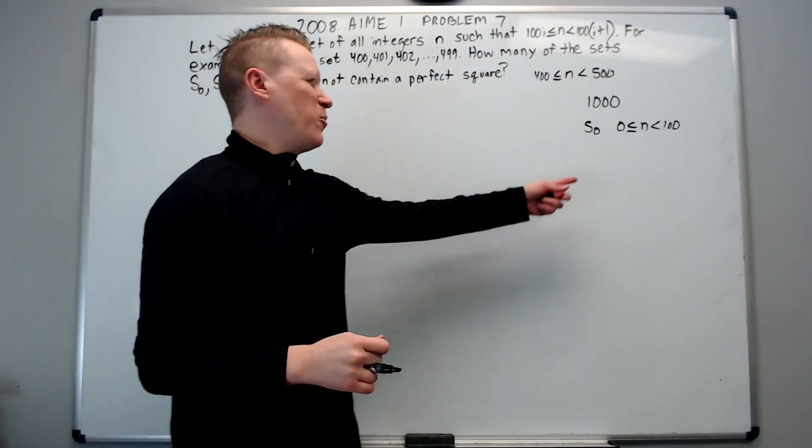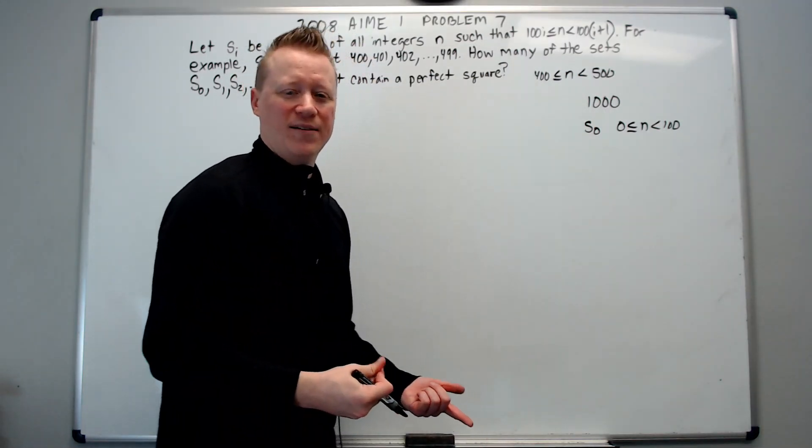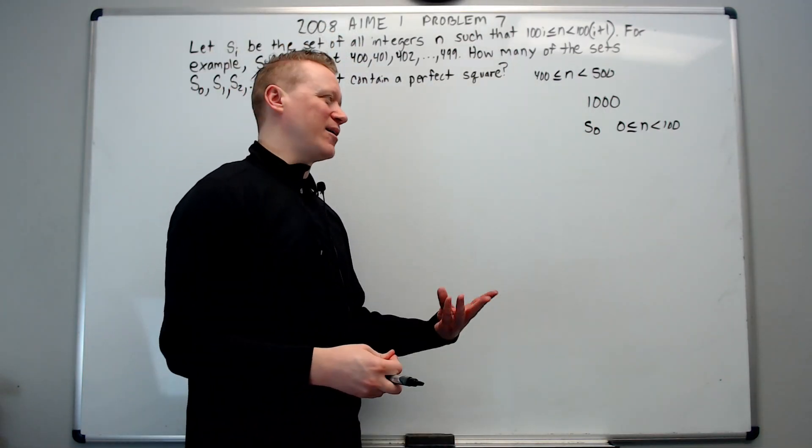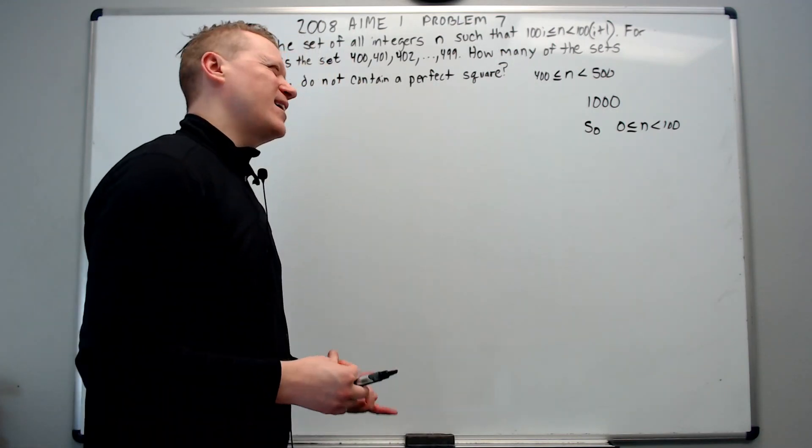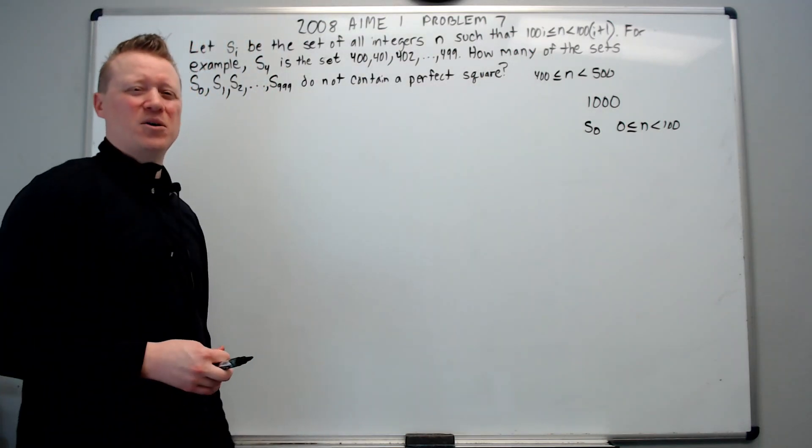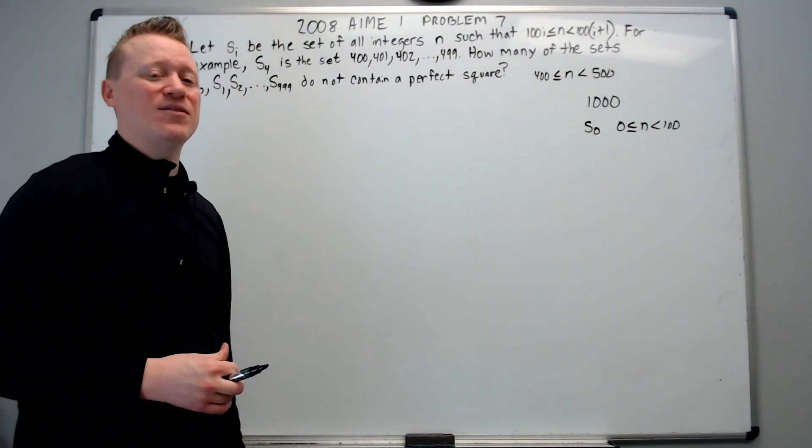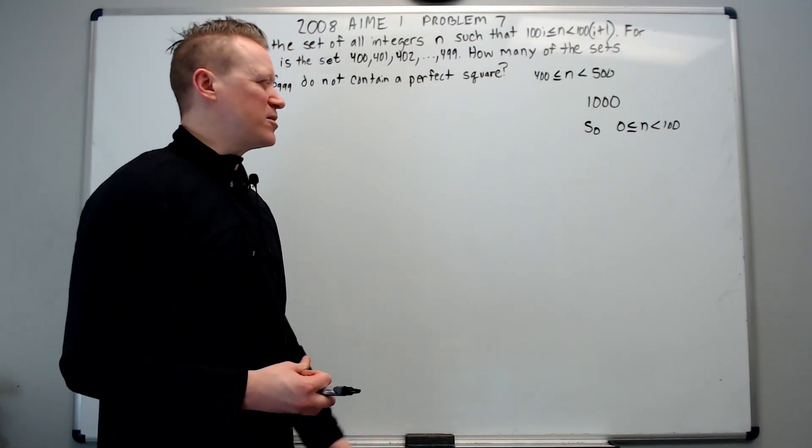For example, we know that s sub 0 will be the set where n is greater than or equal to 0 and less than 100. Basically, it's the first 100 integers starting from 0. And we could think, well, there's obviously tons of perfect squares in here. And s sub 1 will have several perfect squares as well. Likewise, s sub 2 and so on. But that's going to get tedious after a while. We don't have time to go this far away, so we're going to need to think of a tactic. We need a tool in our tool belt to be able to accomplish this.